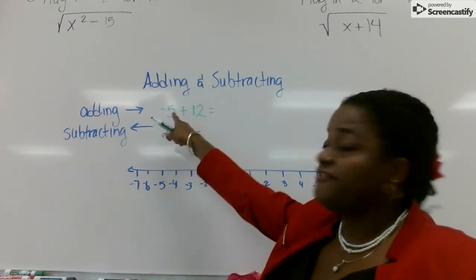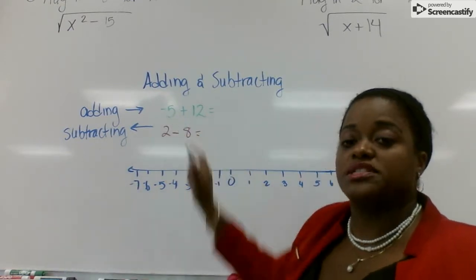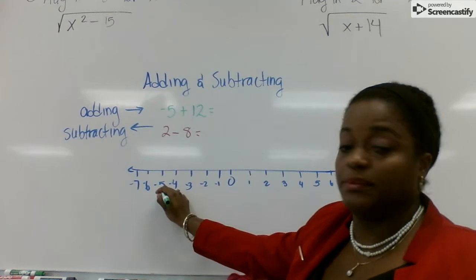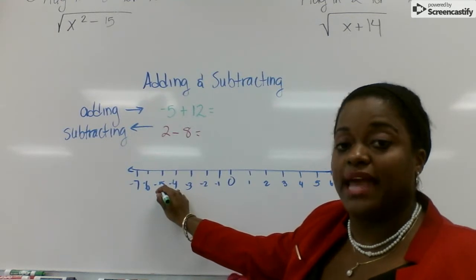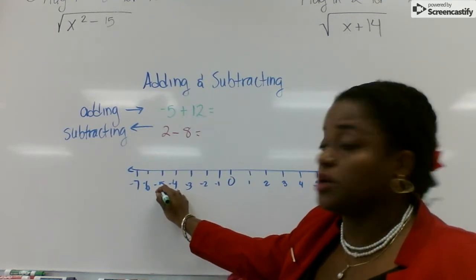So our first problem is negative 5 plus 12. We start at negative 5 on the number line, and we go 12. When we add, we're increasing, we move to the right. So let's add 12.